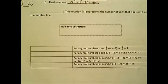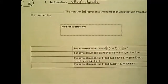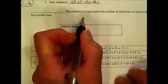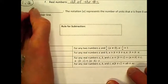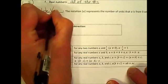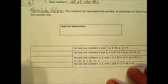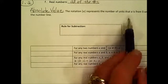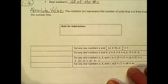This section deals with operations and properties of real numbers. The first thing we want to identify is absolute value notation. When you have vertical lines around a number, it's talking about the absolute value, and what it deals with is the distance a value is from zero on the number line.